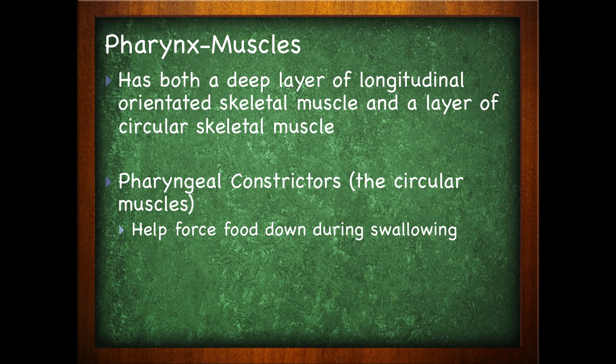The muscles of the pharynx — we didn't talk about this in the respiratory system, but we need to take a look at it here in the digestive system. The pharynx has both a deep layer of longitudinal orientated skeletal muscles and a layer of circular skeletal muscles. The pharyngeal constrictors, which are the circular muscles, help force the food down your throat during swallowing.